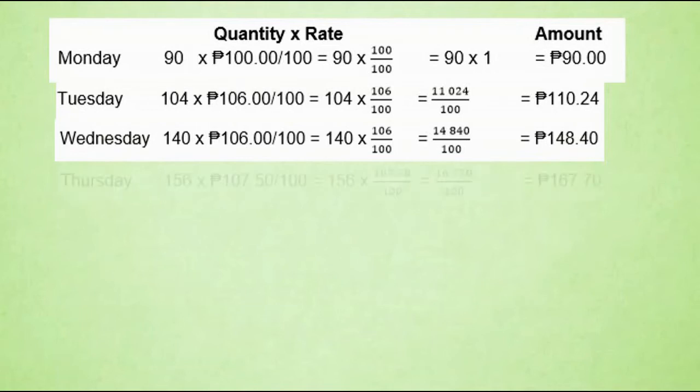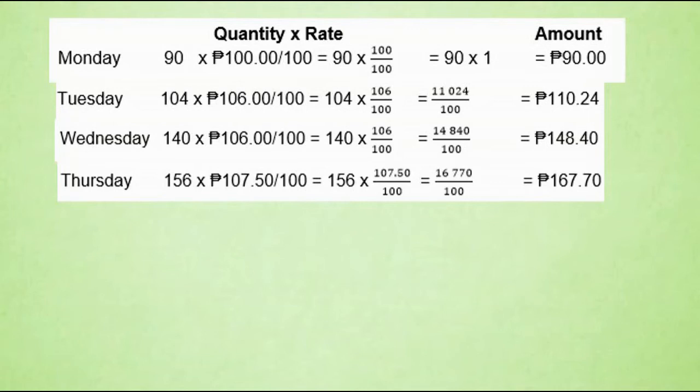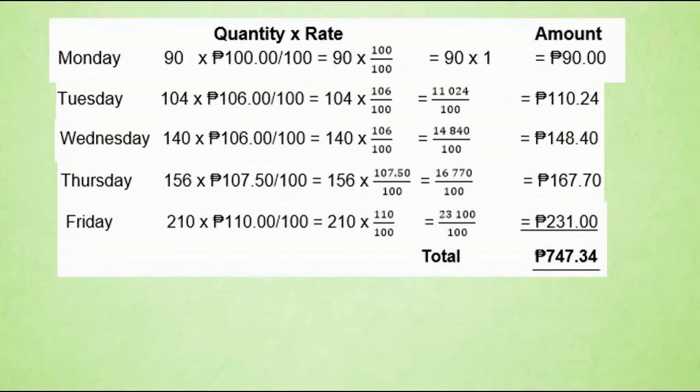Thursday: 156 multiplied by 107 divided by 100, that is 16,770 divided by 100, which is 167 pesos and 70 centavos. Friday: 210 multiplied by 110 pesos divided by 100, that is 23,100 divided by 100, which is 231 pesos. So if we total these amounts, we come up with 747 pesos and 34 centavos.